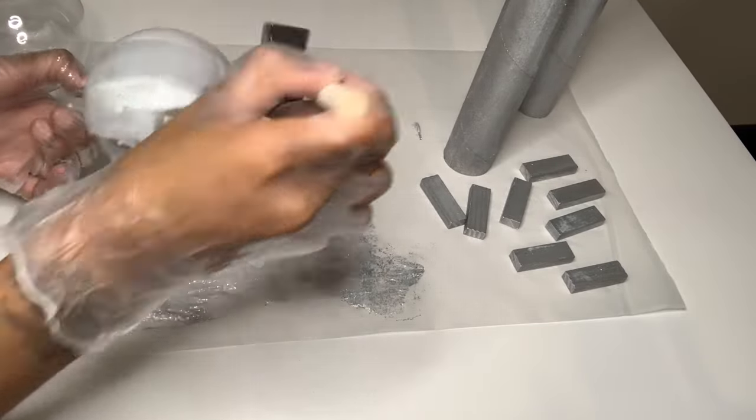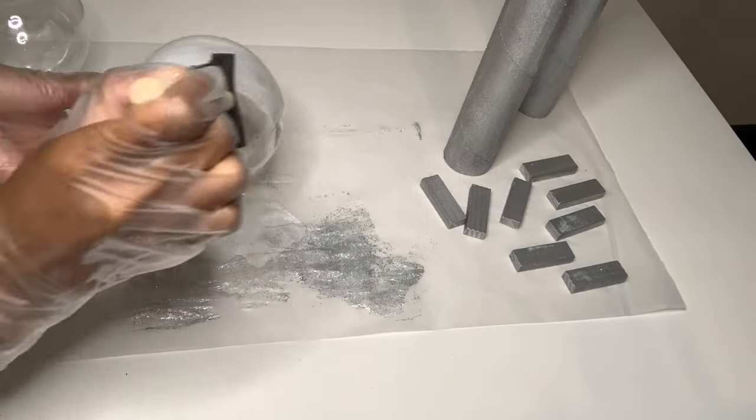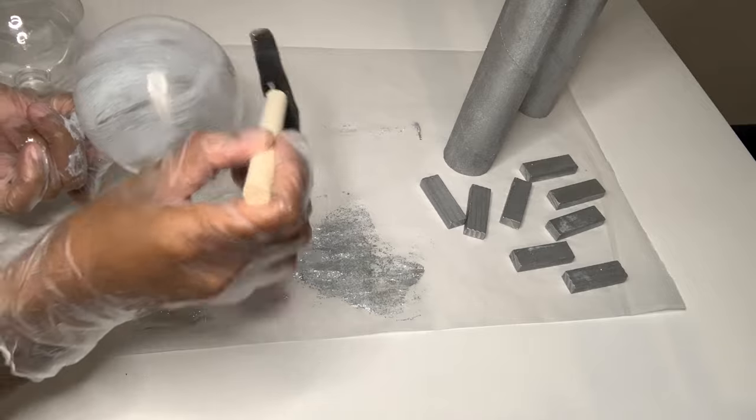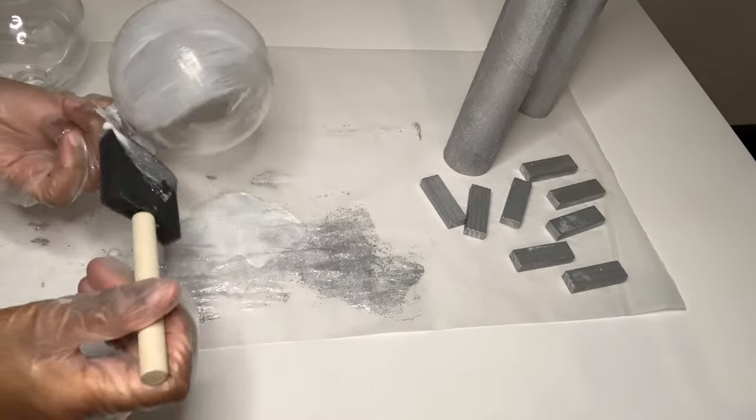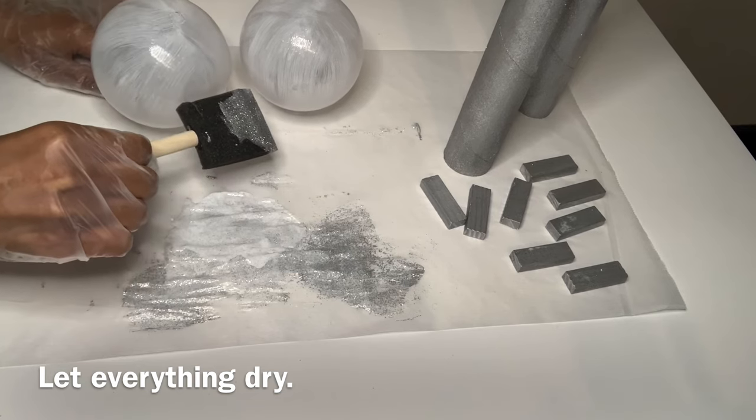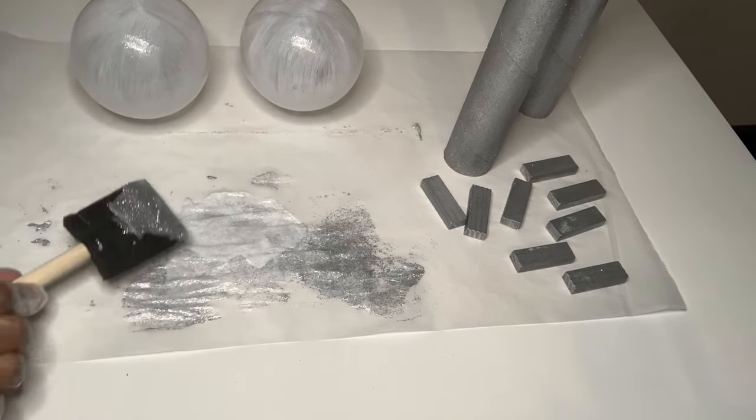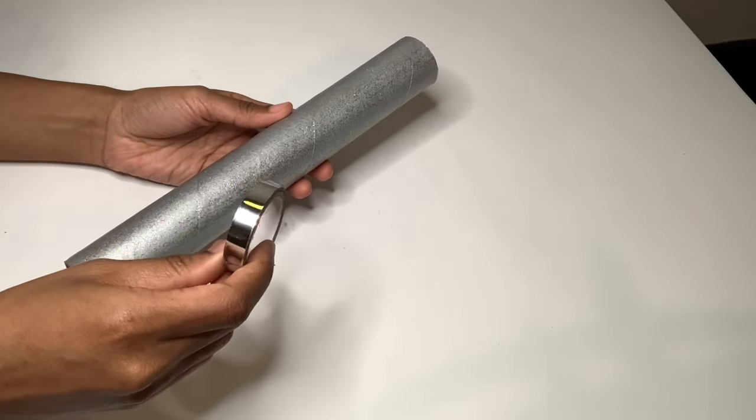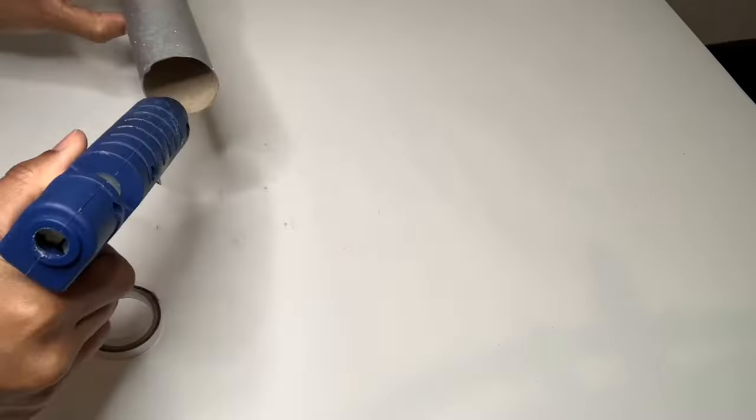Now that my paper towel rolls are dry I'm going to use some of this metallic tape to decorate it. I'm just following along the visible line that's already on the paper towel roll.